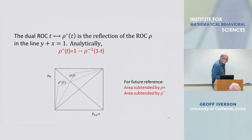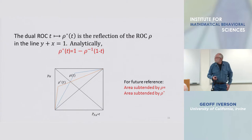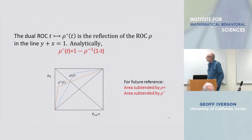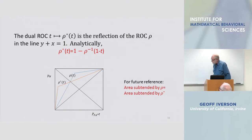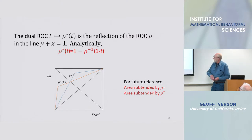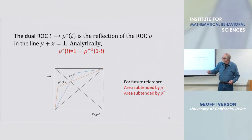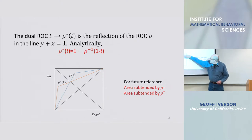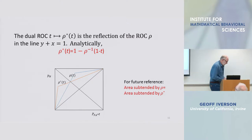and that's easy if you just rotate everything by 45 degrees, the area subtended by rho is the same as the area subtended by rho star.